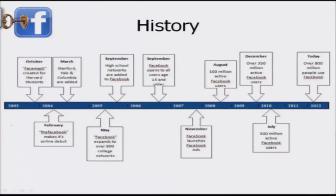Facebook is about relating among people with common interests, common activities, and common experiences. A quick history: in 2003, FaceMash was created for Harvard students. By February 2004, Facebook made its debut — many of you would have watched the movie 'The Social Network.' In March, Stanford, Yale, and Columbia were added. By May 2005, 800 colleges were included, then schools were added, and finally in September all users over the age of 13 were allowed to have a Facebook account.